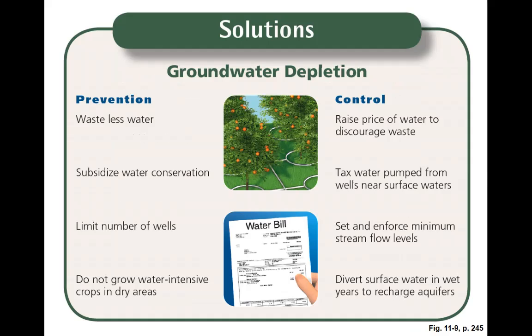So what can we do to help with groundwater? One, waste less water — use only water when you need it. We need to subsidize water conservation, not water prices. Water is incredibly cheap, so it's easy to forget about it and waste it. Limit the number of wells and don't grow water-intensive crops in dry areas — Nevada, Las Vegas, California, Arizona — these places were not meant to be big bread baskets growing high water-need plants. We can also raise the price of water to discourage waste. Nobody likes paying more, but if you do, you'll probably value that resource more.